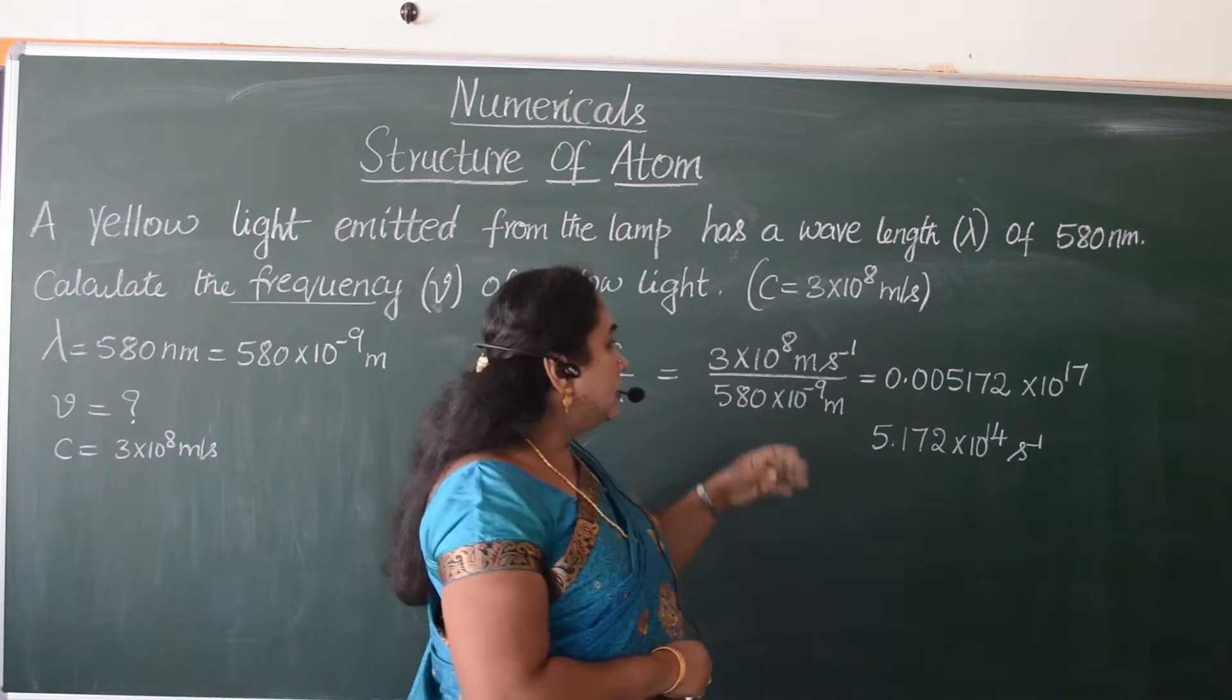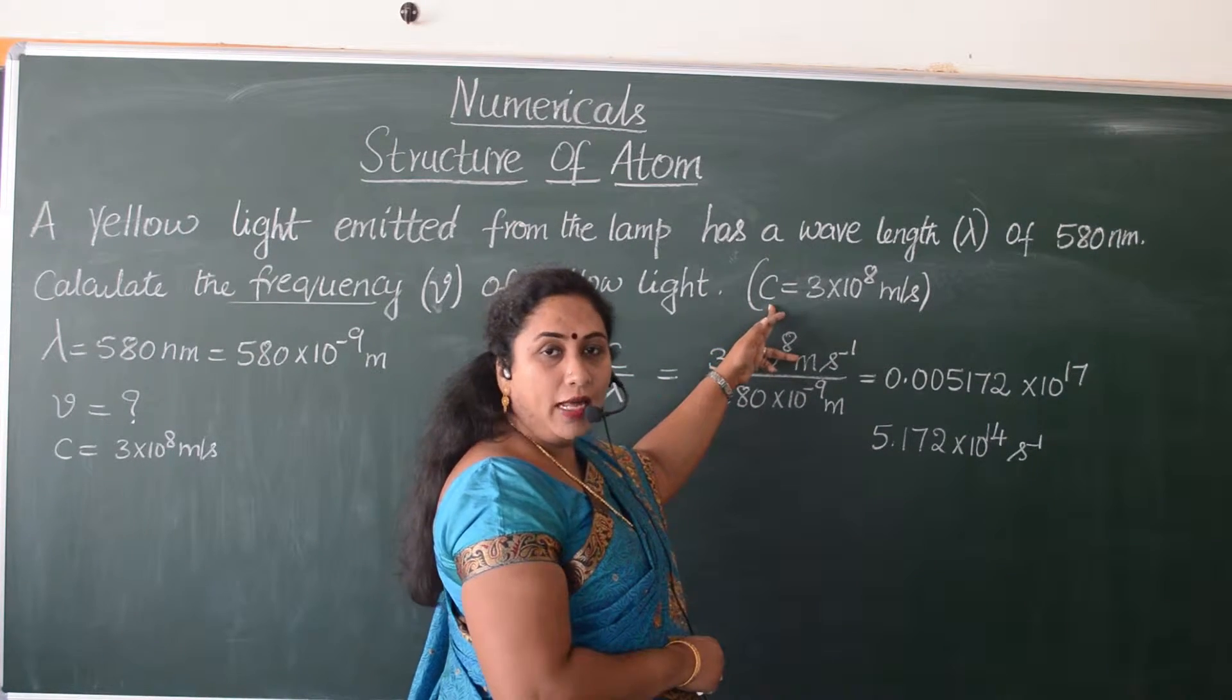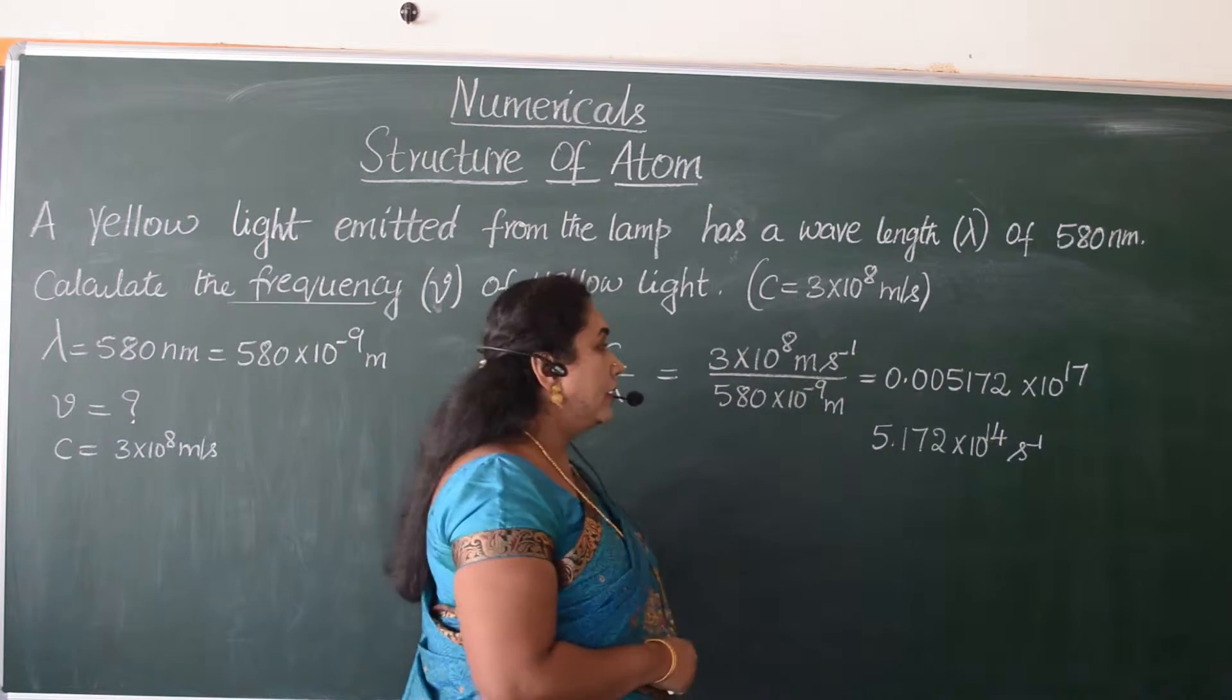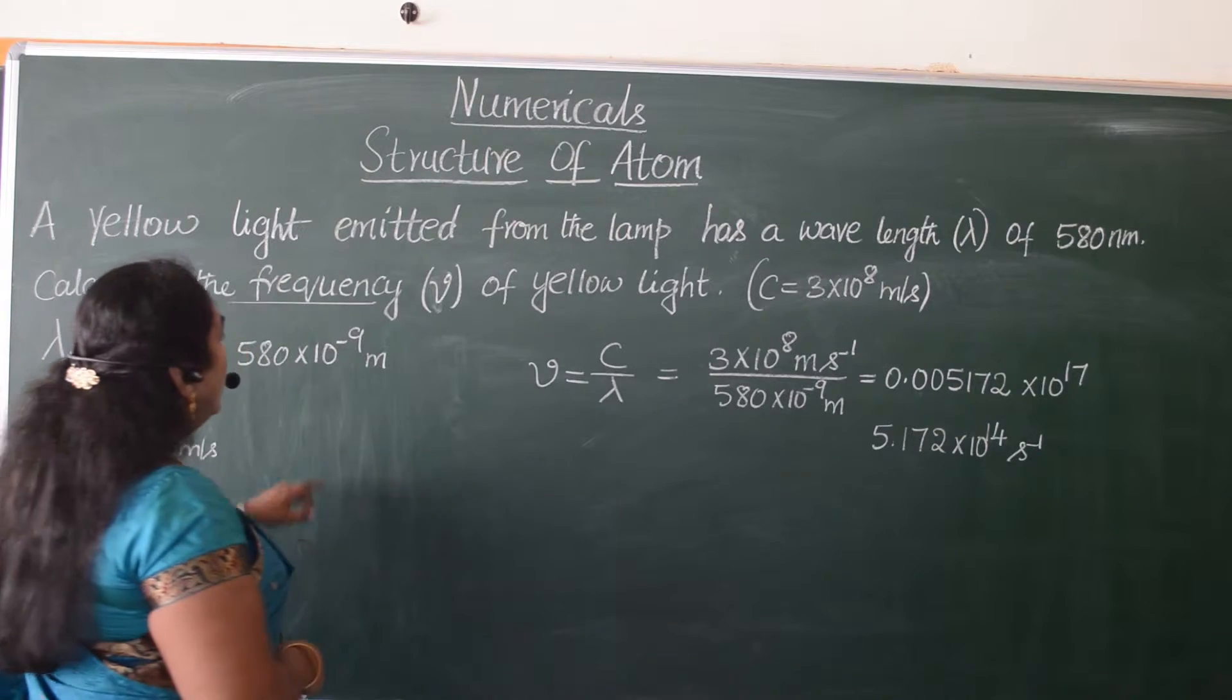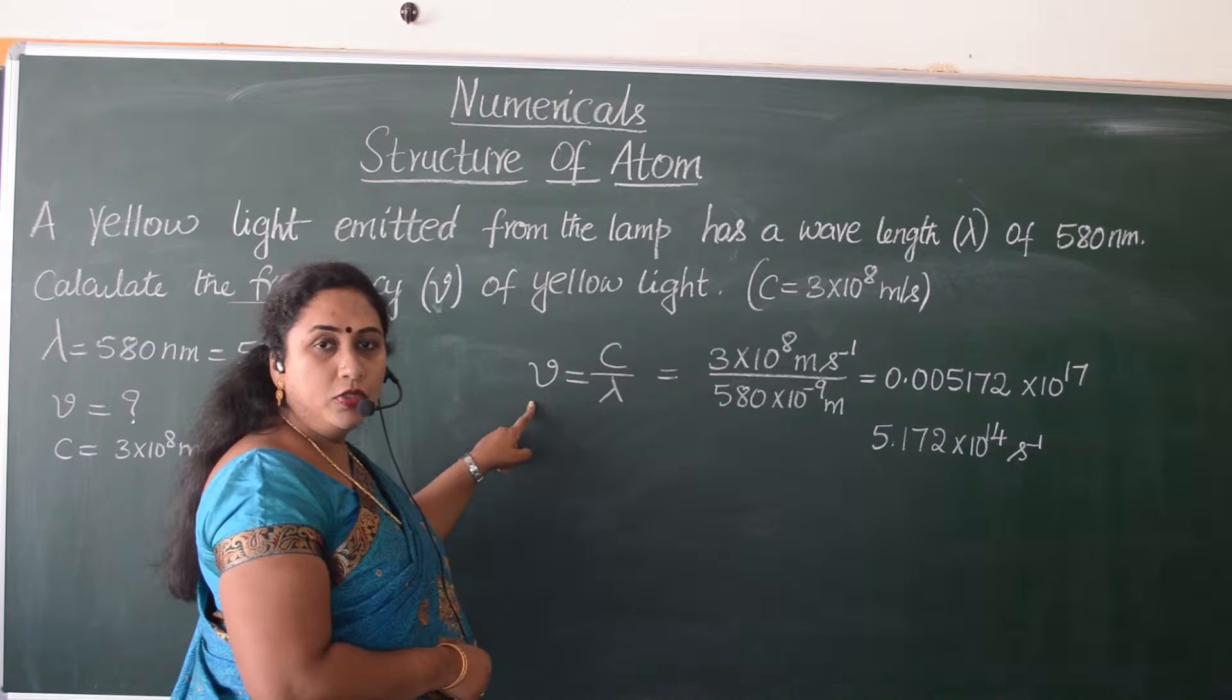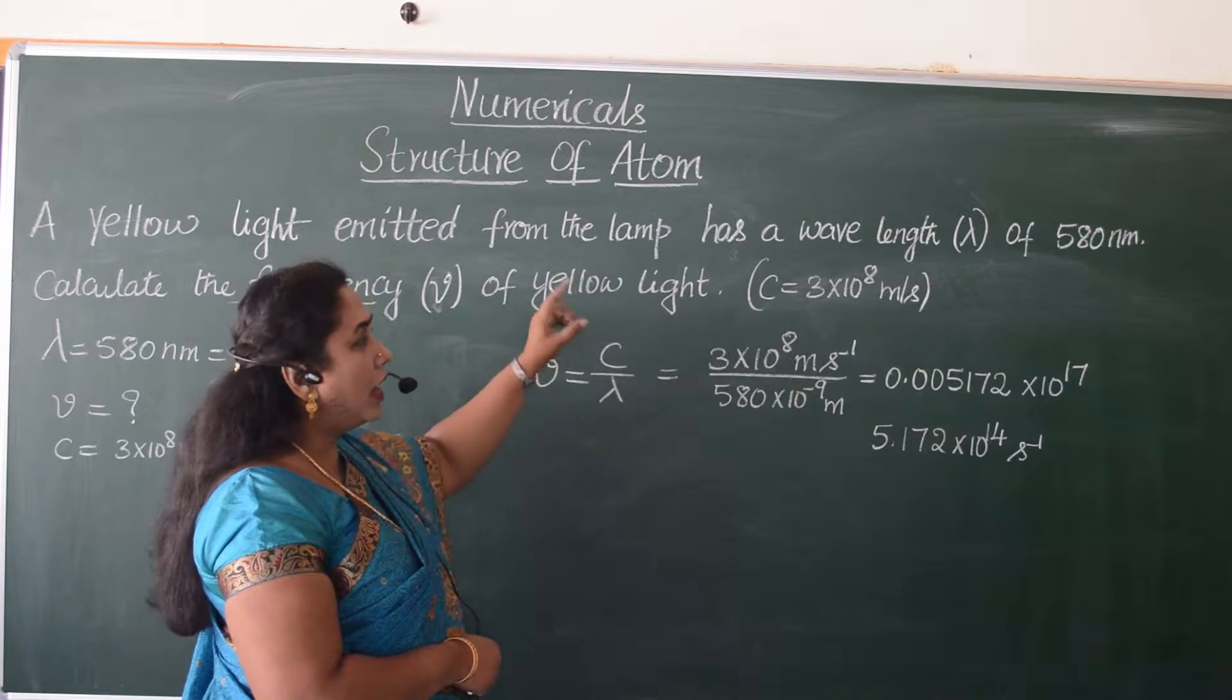You should always remember C, the velocity of light, is 3 × 10^8 meters per second. Now to calculate the frequency, that is nu, the formula to be used is C by lambda.